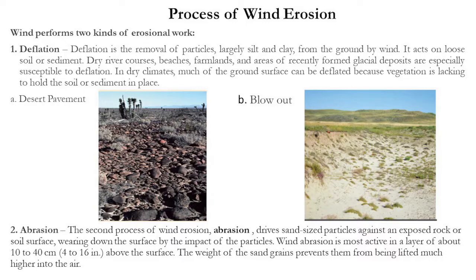Deflation is the blowing away of loose particles — loose sand, clay, or silt — from the ground by the wind. You must have experienced this when there is high wind speed, cyclonic conditions, or before rainfall when wind velocity is relatively higher. If you are riding a bike or cycle, some dust particles enter your eyes. The wind with the help of its speed blows away loose particles lying on the ground and sweeps them away.